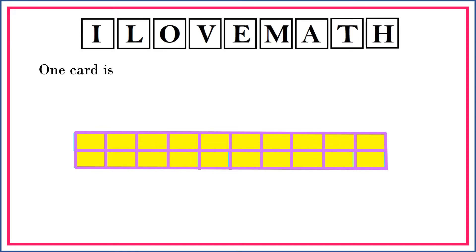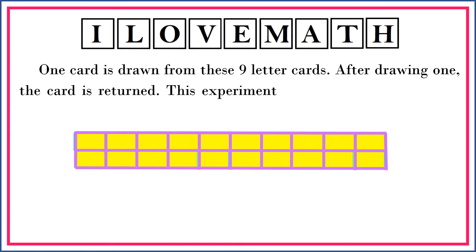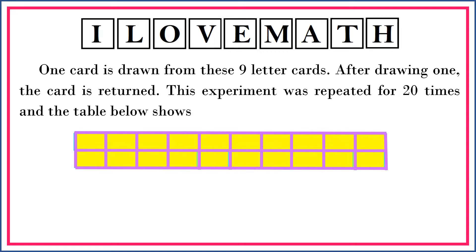Let's now try to analyze data obtained from chance using letter cards. Let us consider this example. One card is drawn from these nine letter cards. After drawing one, the card is returned. This experiment was repeated 20 times and the table below shows the outcomes.